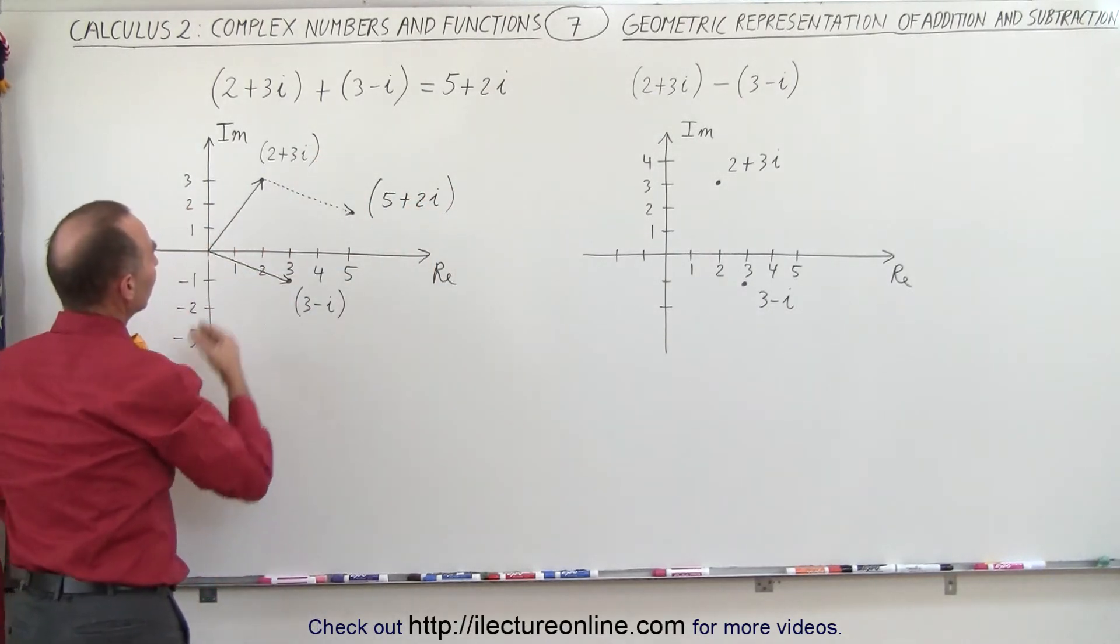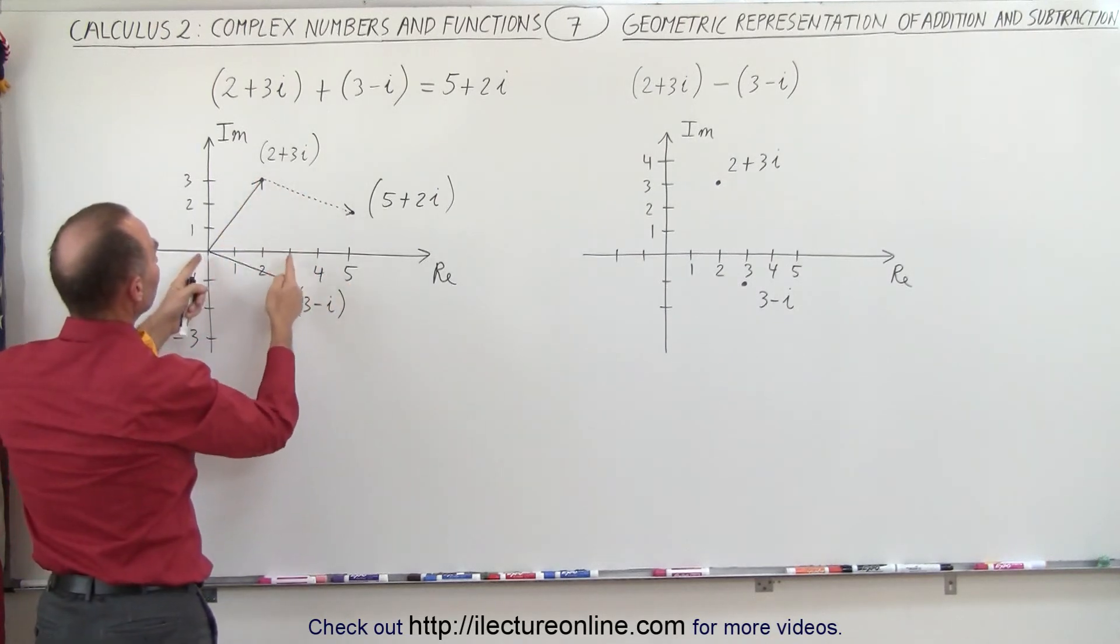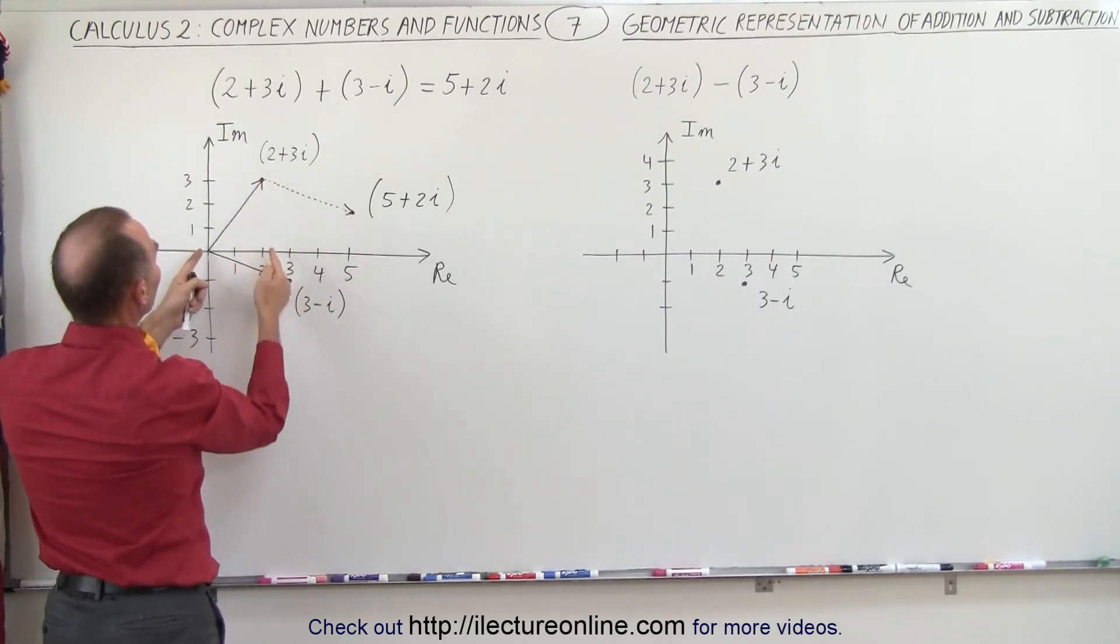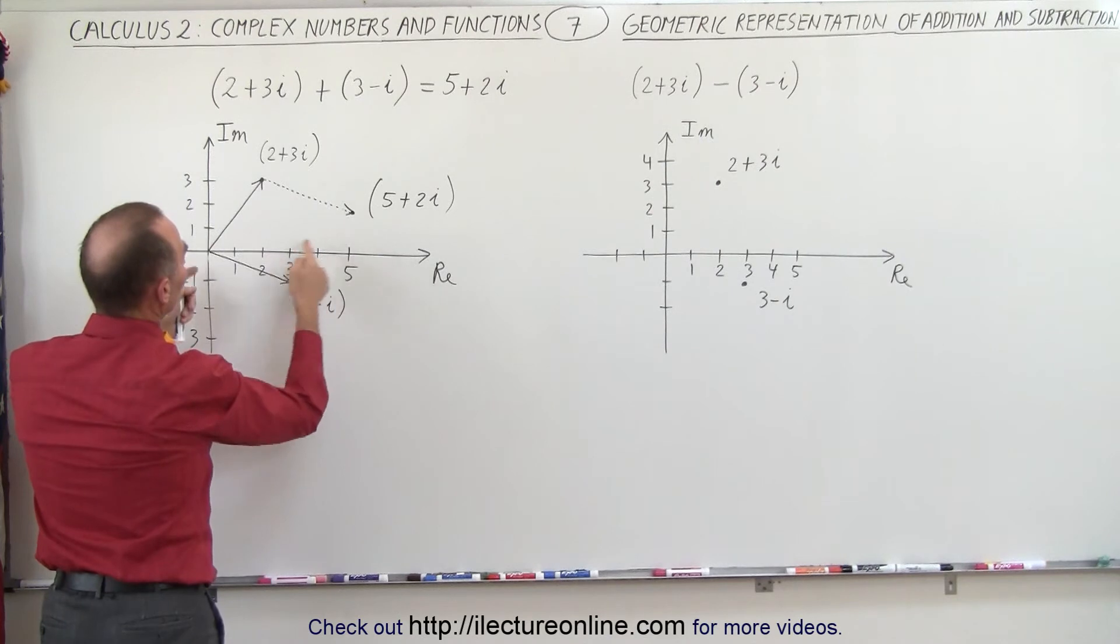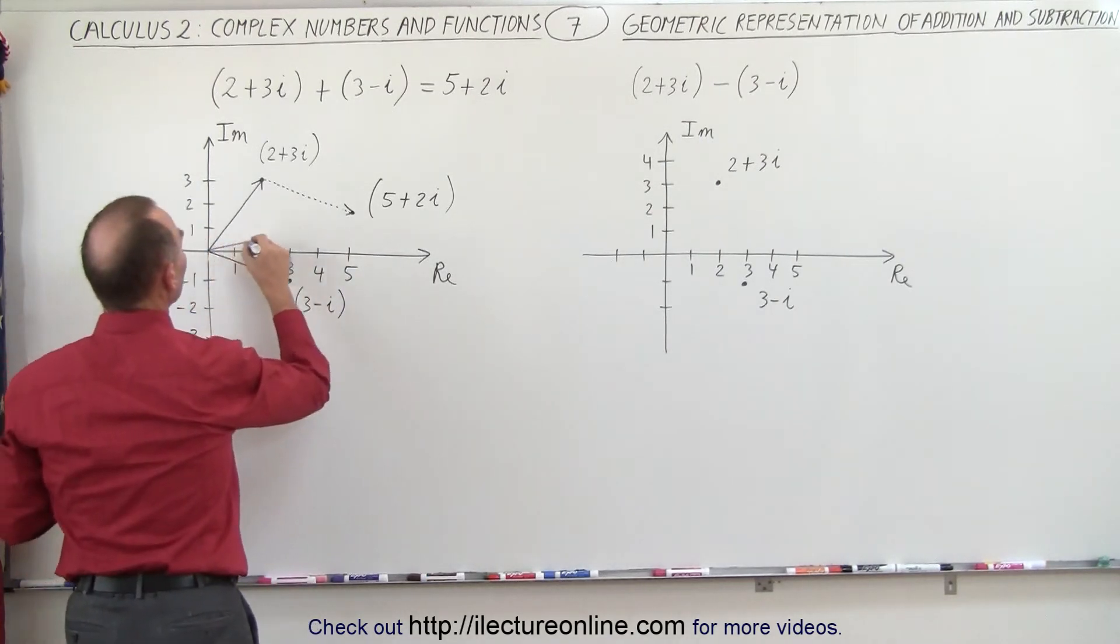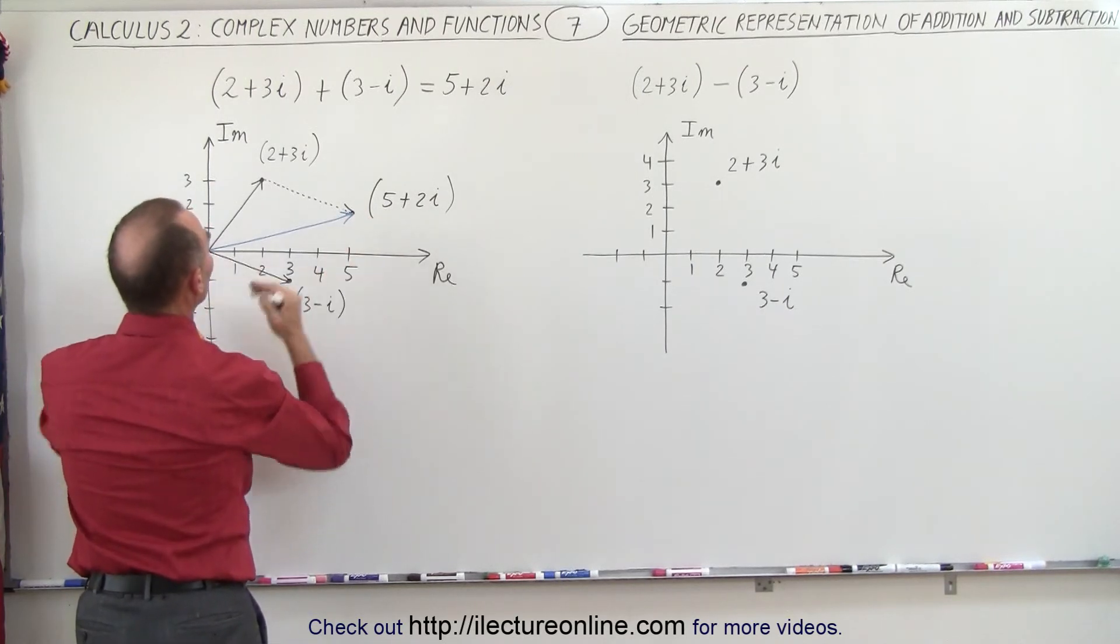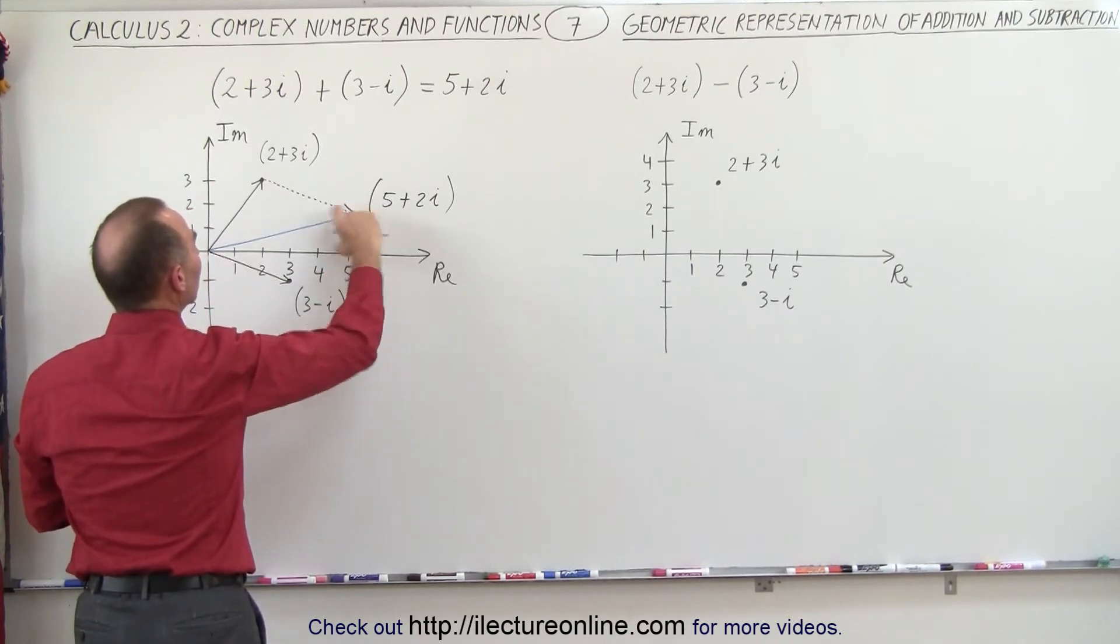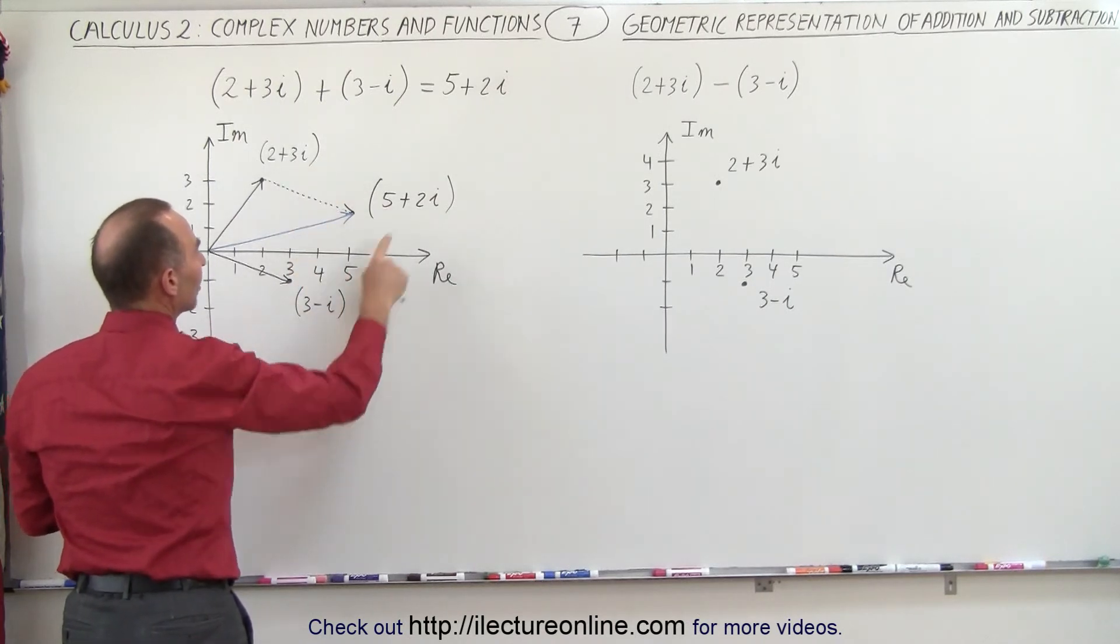And you can see that that would be the exact same thing that you get if you add these two vectorially. We add the real component of the first number plus the real component of the second number, 2 plus 3 gives us 5, so the solution would be the sum of those two. We have 5 units in the real direction and 2 units in the imaginary direction by adding 3i plus minus i together.